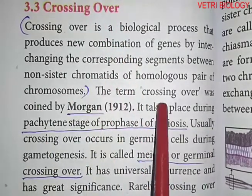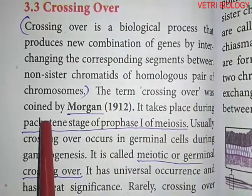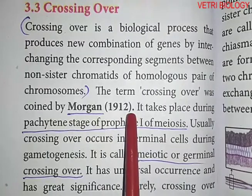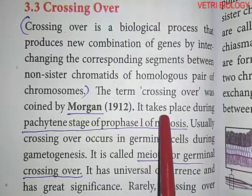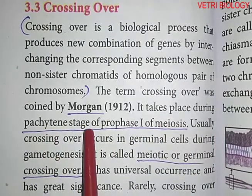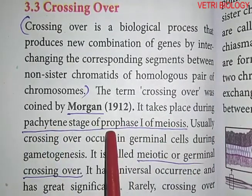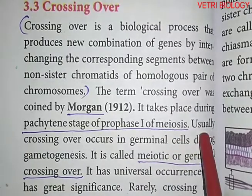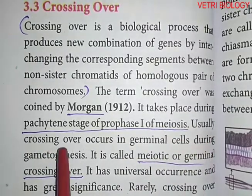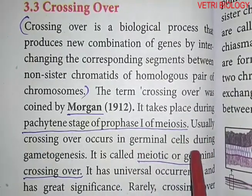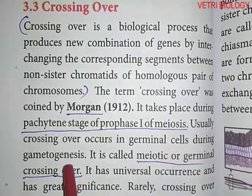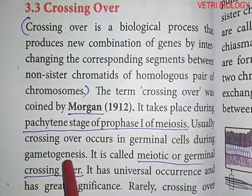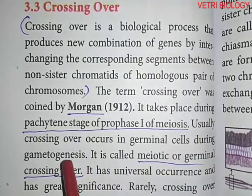The term crossing over was coined by Morgan in 1912. It takes place during the pachytene stage of prophase I of meiosis. Usually, crossing over occurs in germinal cells during gametogenesis. Gametogenesis means the formation of gametes.